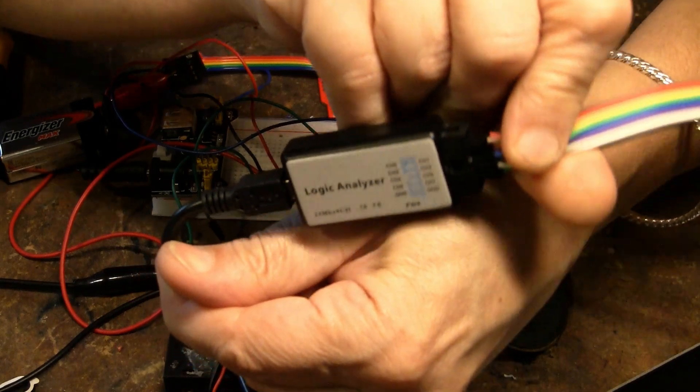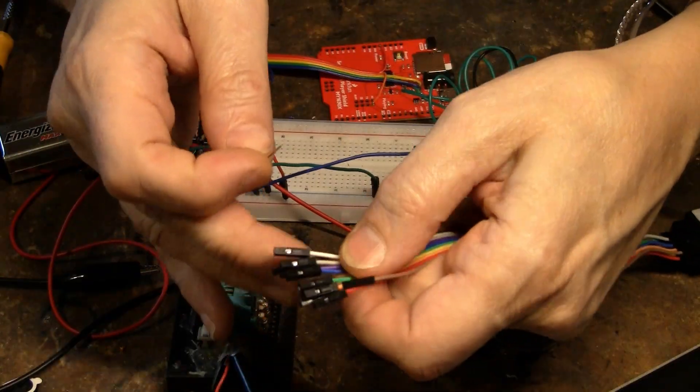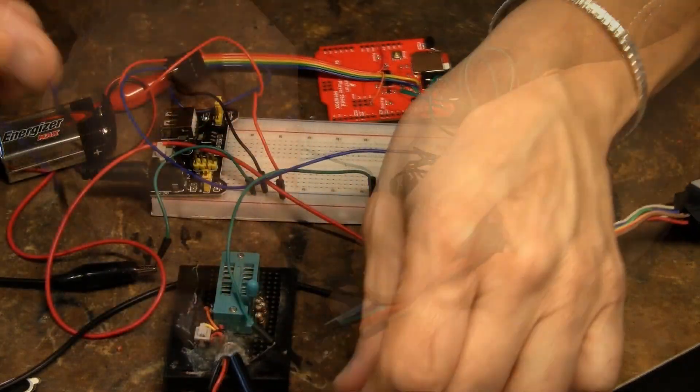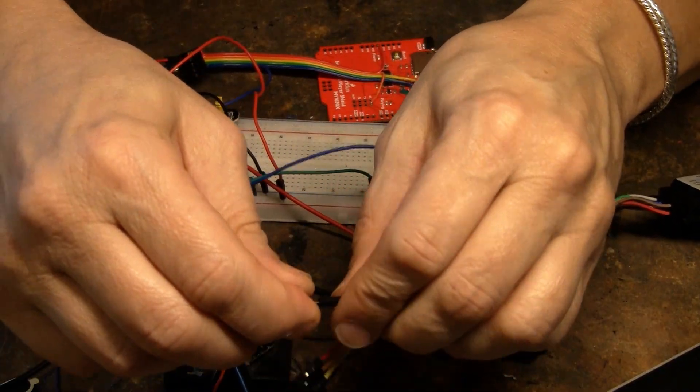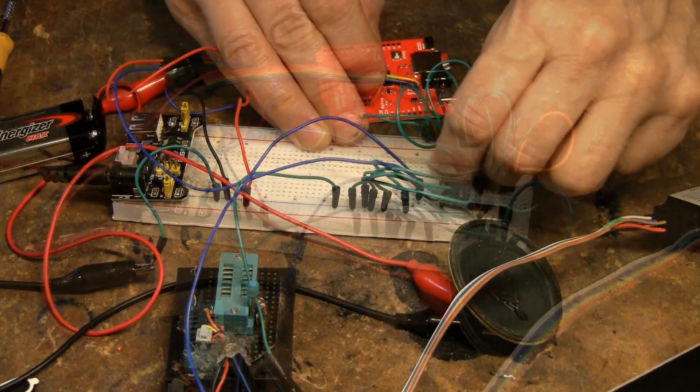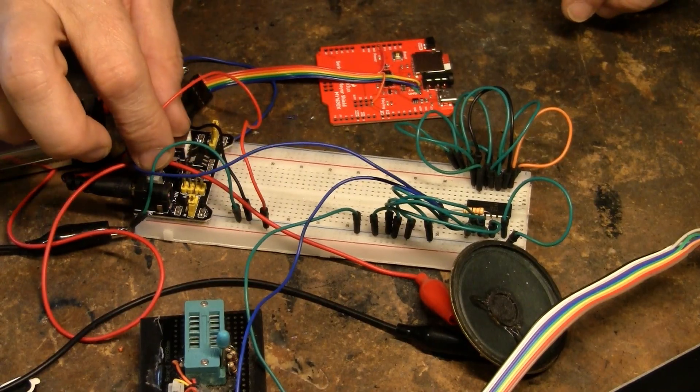This is a logic analyzer. Ground it. There's two grounds here. So that's ground. Then I'll use this. Go into this pin here. And then I'm going to plug it in. So let's look at it on the logic analyzer. I'll turn it on.